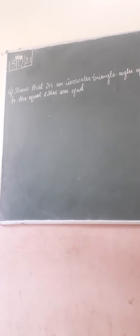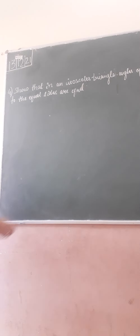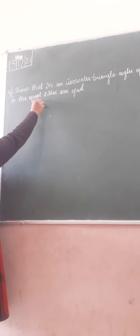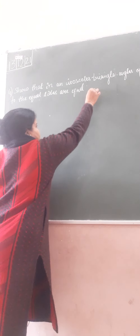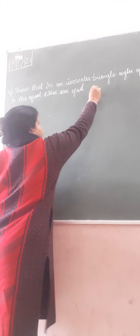Our question is: show that in an isosceles triangle, angles opposite to the equal sides are equal. Now, how we are going to prove it — we will draw an isosceles triangle.